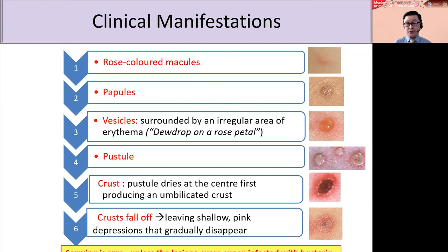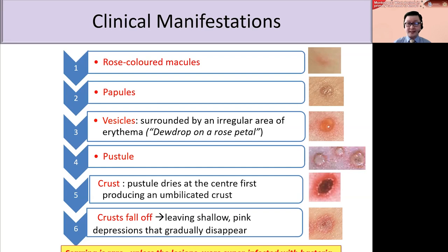In chickenpox, the morphological change begins with rose-colored macules, then papules, then vesicles. In chickenpox, the vesicles are typically very superficial and surrounded by an irregular area of erythema — sometimes described as dewdrops on a rose petal. This is quite different from monkeypox, which is usually larger and deeper. From vesicles, it transforms into pustules and then evolves into crusts, which fall off leaving shallow pink depressions that gradually disappear.